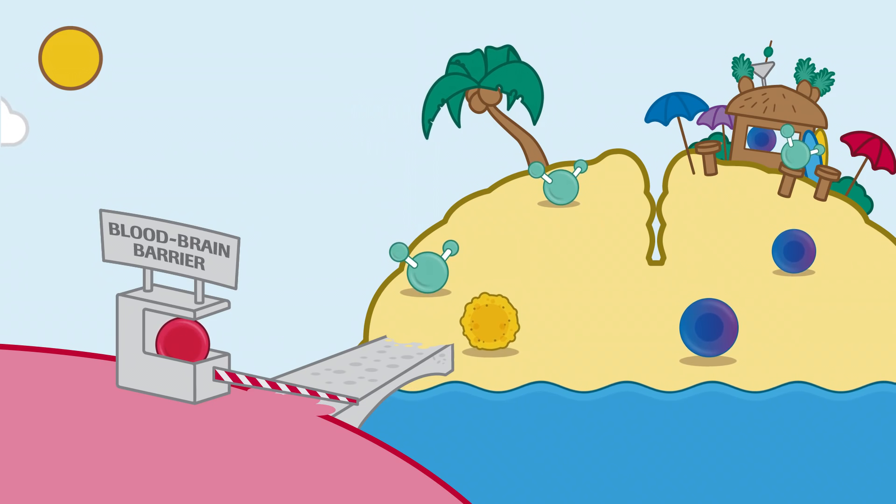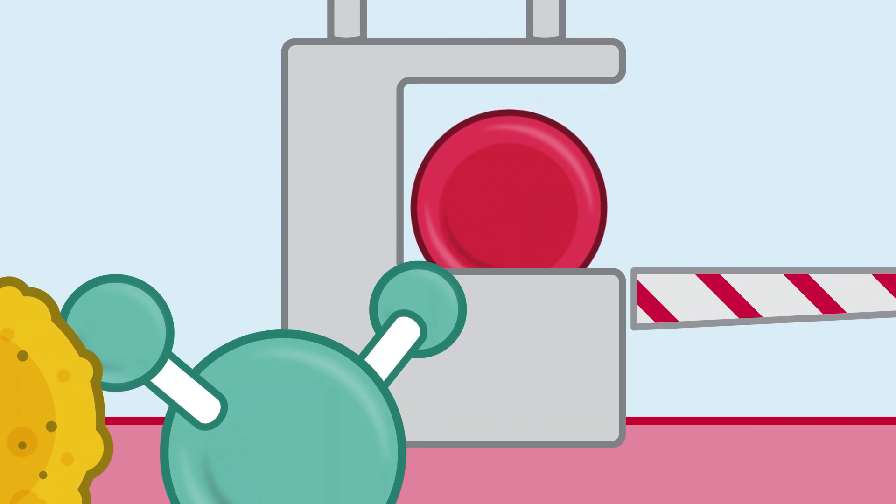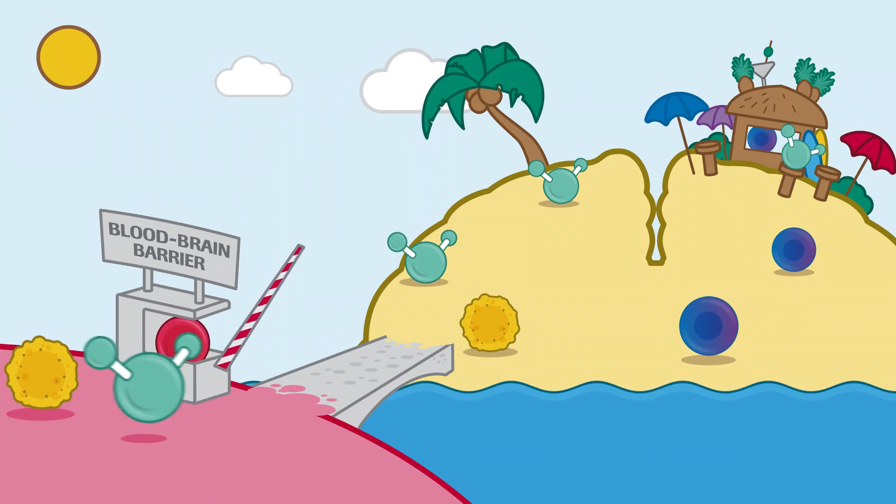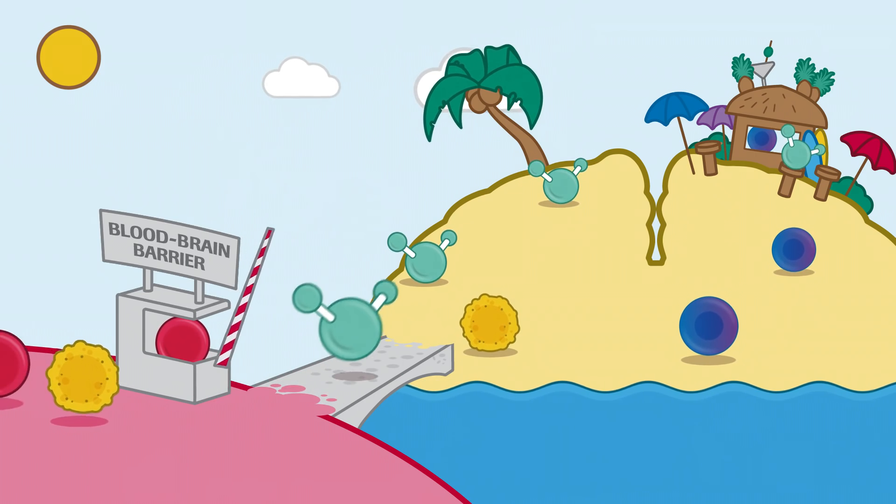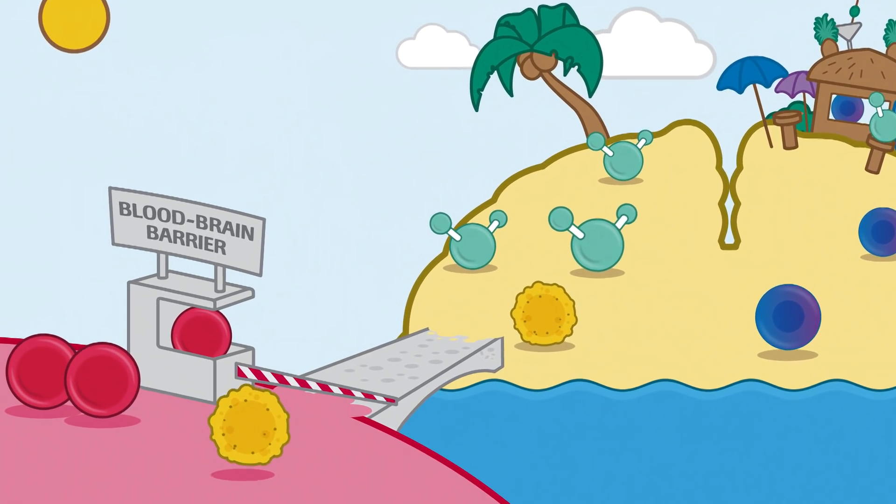Imagine the brain is an island and there are lots of people trying to get across to it, just like molecules trying to get into the brain. To get across to the island, you have to be in possession of a ticket, which is checked at the ticket booth. Anyone without a ticket has to return to the mainland, just as some molecules are unable to cross into the brain and are forced to stay in the blood.